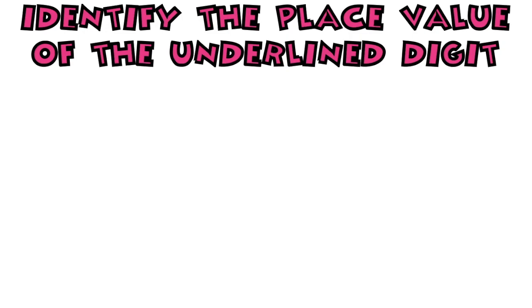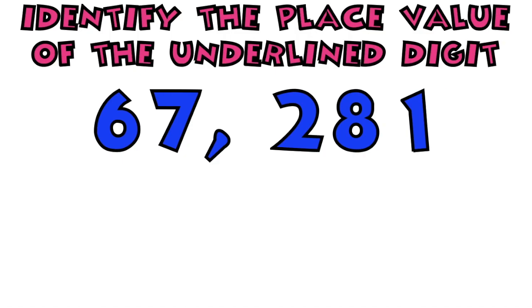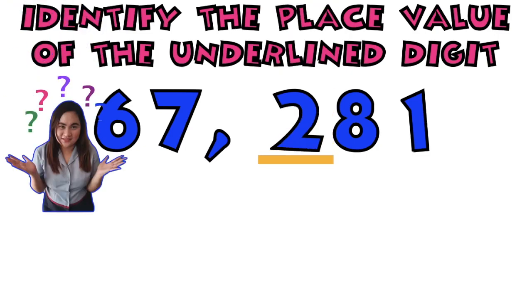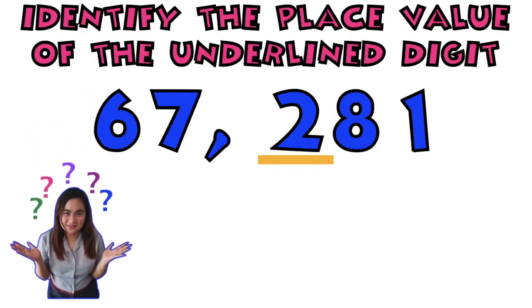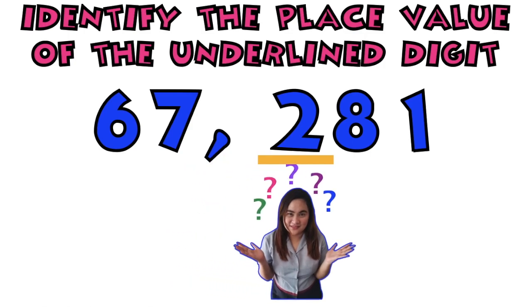Let's have number 1. I have here 67,281. What is the place value of digit 2? Timer starts now!